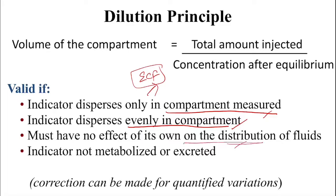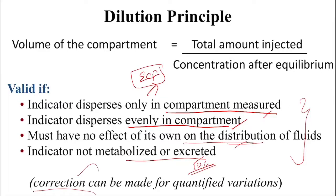The dye should not have any effects of its own on the distribution of fluids, and it should not be metabolized or excreted during the period of estimation. We may not find a dye that absolutely satisfies all these criteria, so if a known amount of dye is being excreted, we may have to make a correction for that in our calculations.